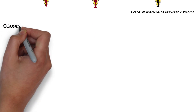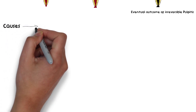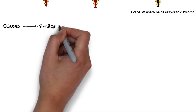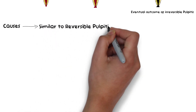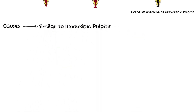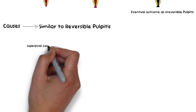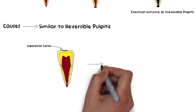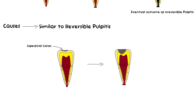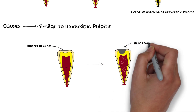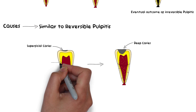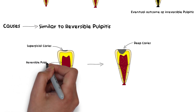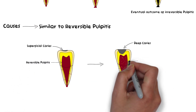The causes of irreversible pulpitis are generally similar to those of reversible pulpitis, except that the causes are now much more exaggerated — like caries of pits and fissures, once progressed deep enough, causing the pulp to be irreversibly inflamed. So the pulp goes from reversible inflammation to irreversible inflammation.